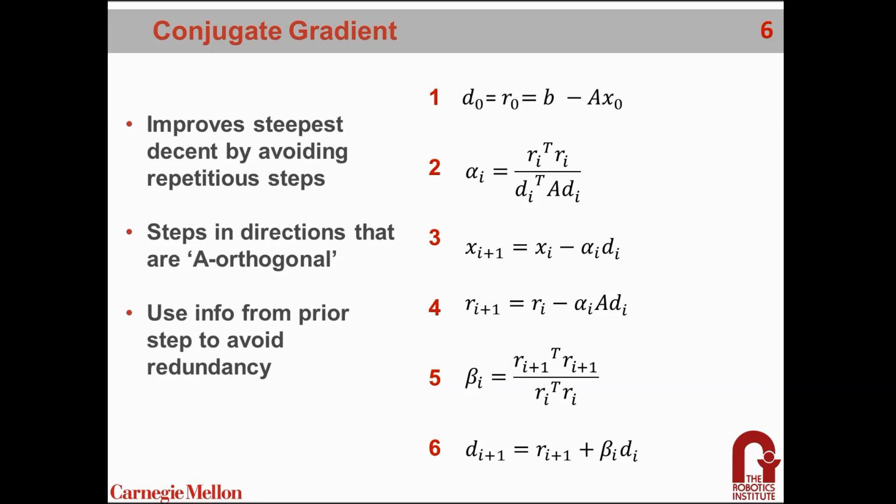The result of this method is that new residuals are orthogonal to all previous residuals and search directions, and new search directions are constructed from the residuals to be A-orthogonal to all previous residuals and search directions. Without going into too much detail, this is the resulting algorithm that accomplishes that. It starts in the same way that steepest descent does, by initializing the d and residual r vectors to just be the negative gradient. Then the rest, these five iterative steps, repeat at each iteration.